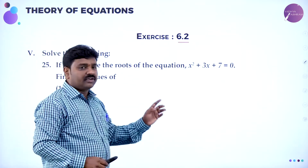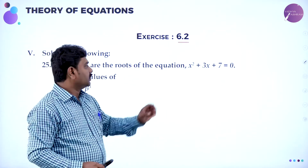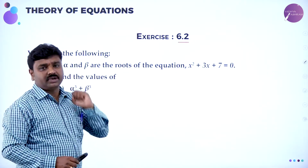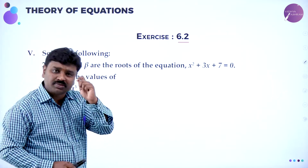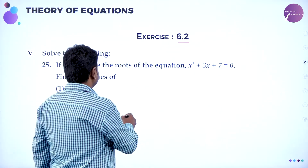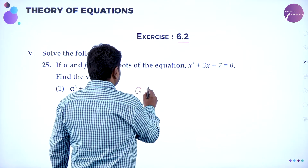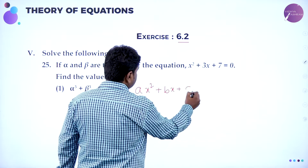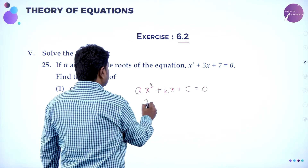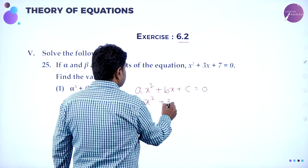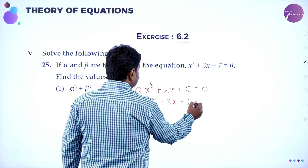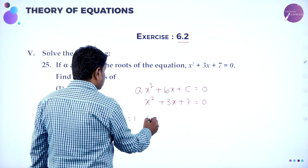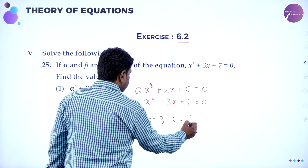When you read the question, they have given the quadratic equation x squared plus 3x plus 7, and alpha and beta are the roots. They want you to find the value of alpha cube plus beta cube. The quadratic equation is in the standard form Ax squared plus Bx plus C equal to 0. The equation they gave is x squared plus 3x plus 7 equal to 0, so by comparison A is 1, B is 3, C is 7.